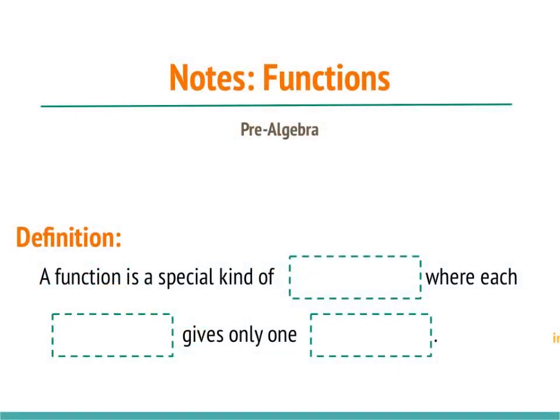Welcome back. Today we're gonna be talking about functions, specifically what makes a relation a function. So to start with we have a definition: a function is a special kind of relation where each input gives only one output. Now let's take a few examples to see what that means.